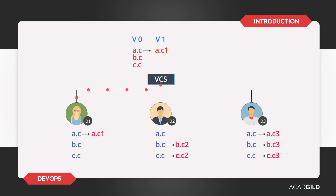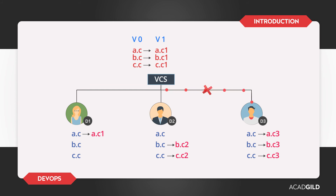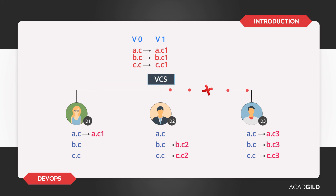Developer 2 pushes his changes into the version control system — BC becomes BC1 and CC becomes CC1 with the changes from Developer 2. Now, Developer 3 pushes his changes into the version control system. Then the system says: you are trying to submit your change, but you are working on an older version of these files — version 0, which is what he downloaded. The version control system identifies the files he has downloaded, and Developer 3 is not allowed to submit the change. The system says: please update your versions to the latest one and then make your changes on top of that so you will not lose the latest versions.